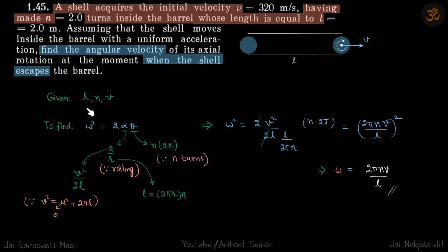So in the problem we are given the length L, number of turns n and velocity v, and we need to find omega when it escapes. Because the acceleration is uniform, if the shell is rolling, the angular acceleration is also uniform.